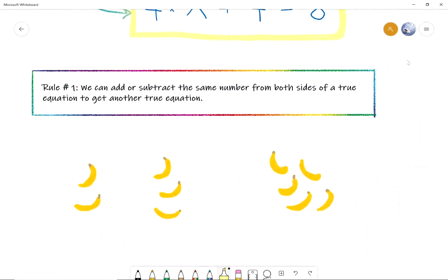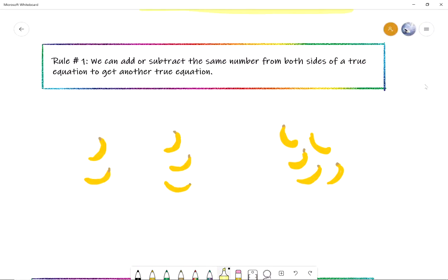Okay, so first we need to learn the very first rule about how to solve equations which is rule number one. Natalie, can you read it? We can add or subtract the same number from both sides of a true equation to get another true equation. Great, so that's correct. This is fundamental. We are able to add numbers to one side of the equation and if we add the same number to the other side of the equation then we get another true equation.